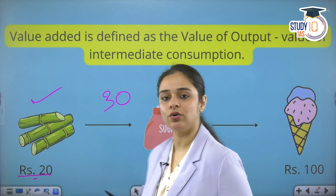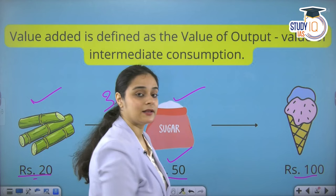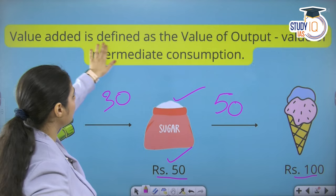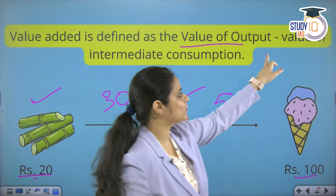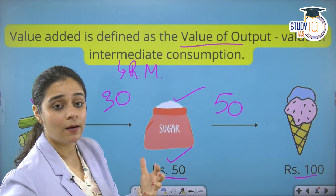Now we use this sugar to make ice cream. The ice cream is worth 100 rupees. We used sugar worth 50 rupees to make it. So the value added at this stage is 100 minus 50, which is 50 rupees. The formula confirms: value added equals value of output minus the value of intermediate consumption.